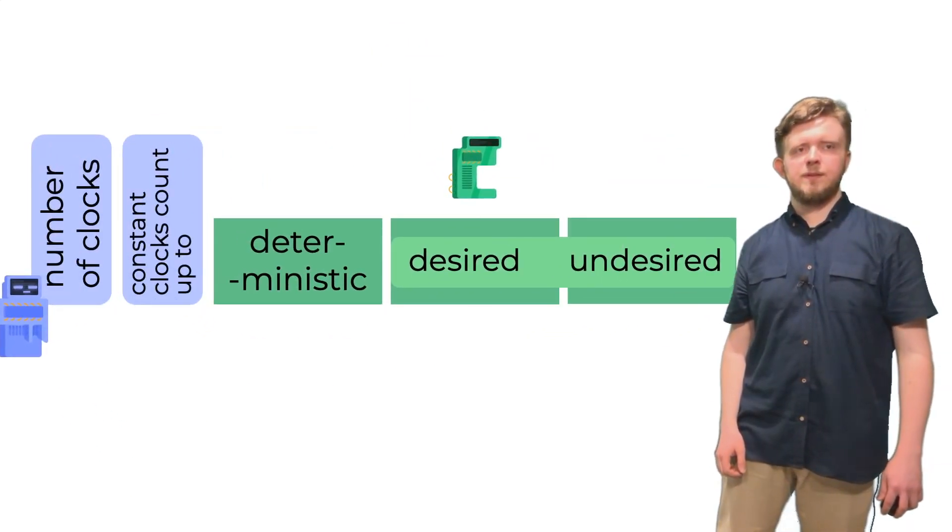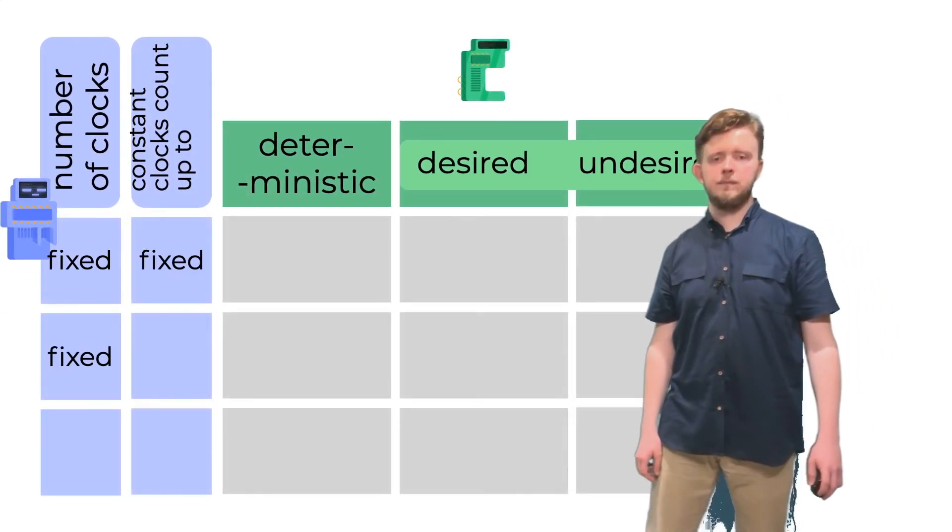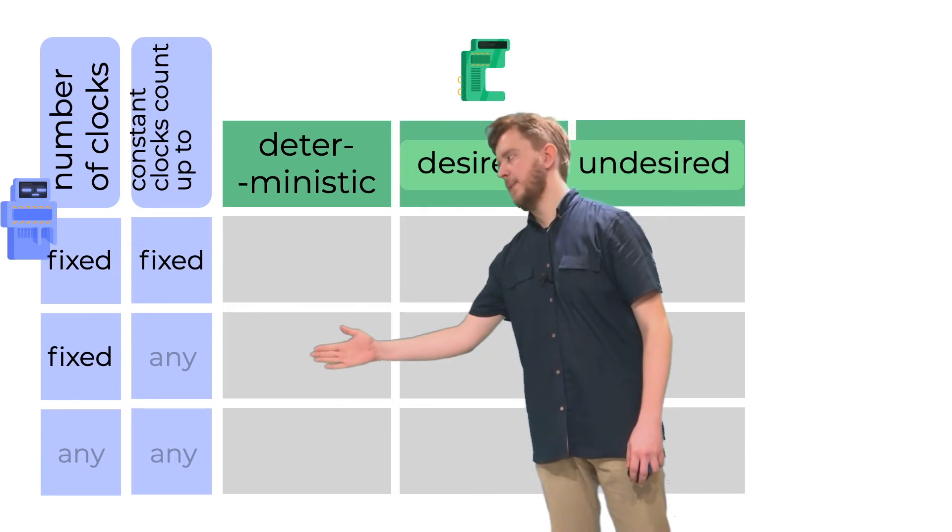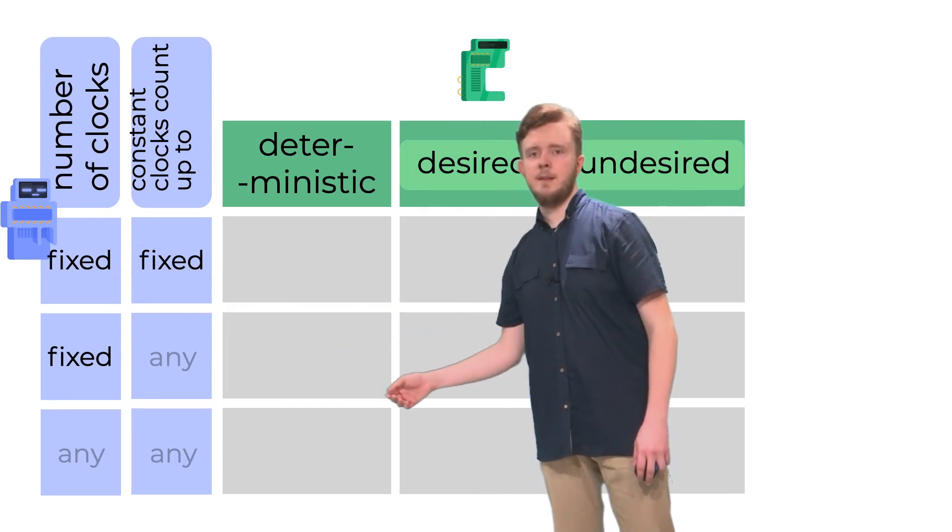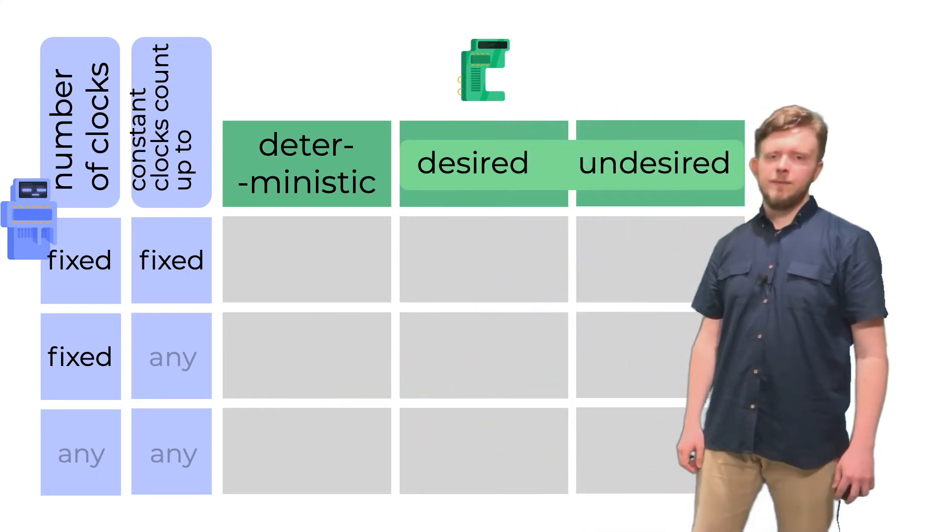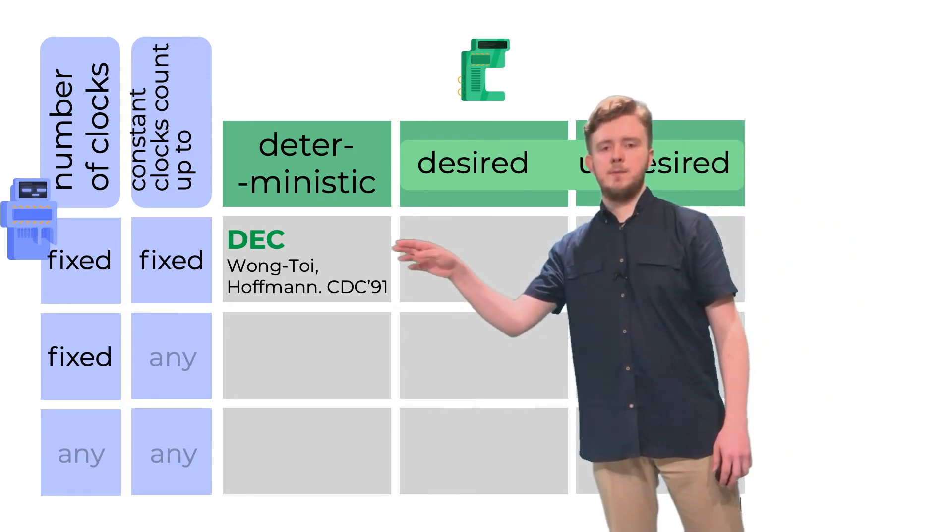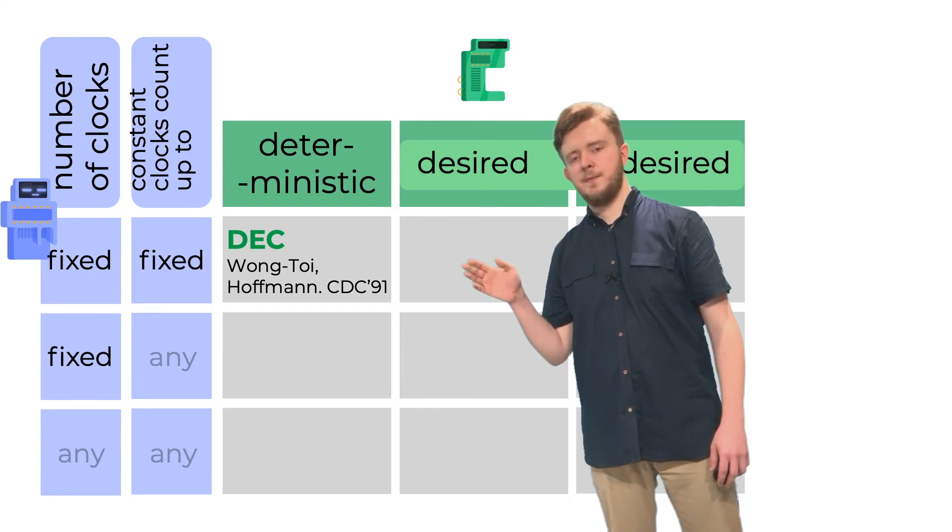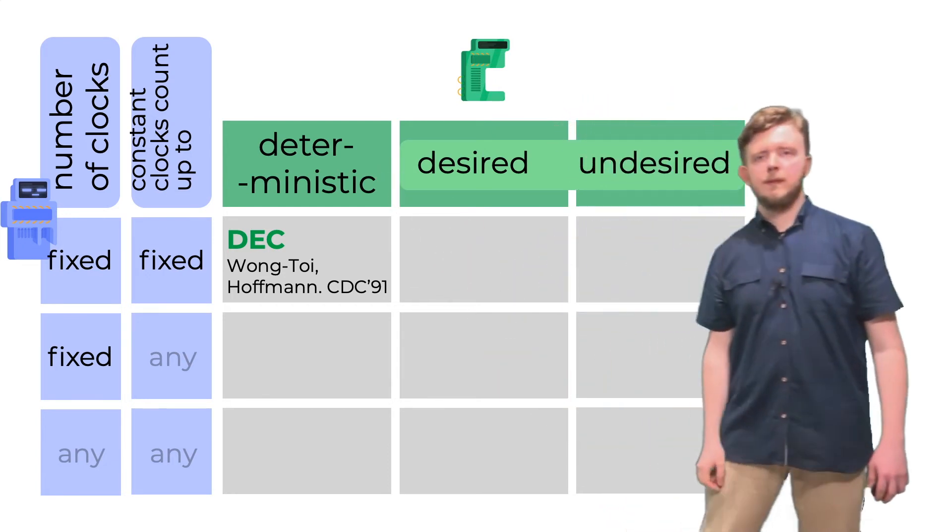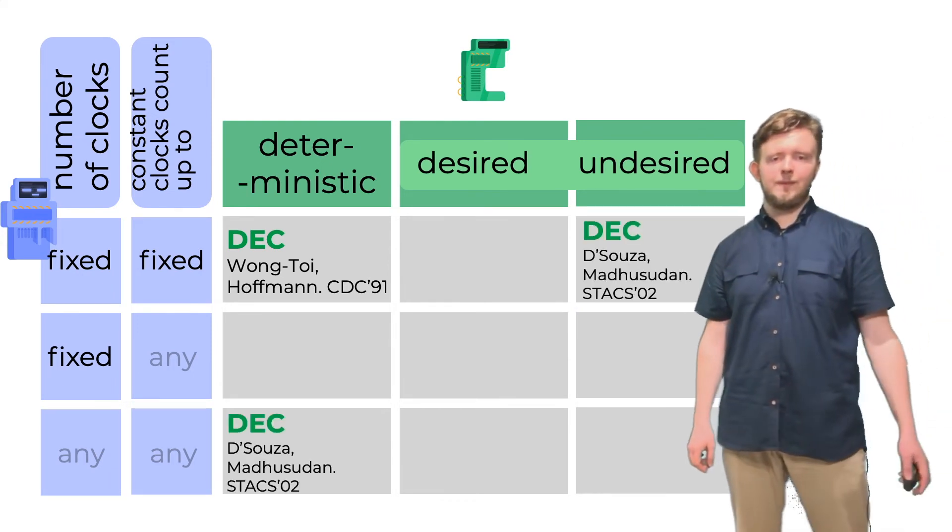The rows, in turn, correspond to the choices about clocks. We analyze the following three: when both constants are fixed, when only the number of clocks is fixed, and finally, when no constant is fixed. First of the known results is a decidability of the simple case here, where all parameters are fixed and the condition is deterministic. Later, two other decidability results were shown, together with three undecidability results.